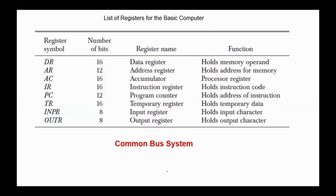We stopped on the list of registers for the basic computer. In the basic computer we have 8 registers. Data register, accumulator, instruction register, and temporary register are 16 bits each. Address register and program counter are 12 bits each, since they are used to address any of the 4096 memory locations. The input register and output register are 8 bits each, used for inputting or outputting one character at a time.